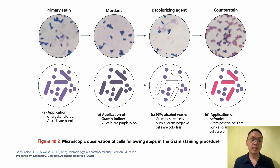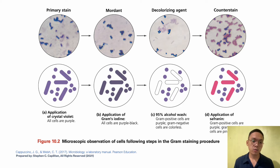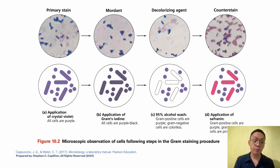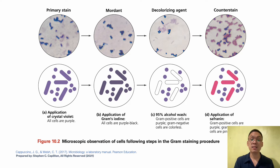The gram stain uses four different reagents. First, application of crystal violet — all cells become purple. Next, application of Gram's iodine — all cells are purple-black. Then the decolorizing agent, 95% alcohol wash — gram positive cells remain purple while gram negative cells become colorless. Finally, application of safranin — gram positive cells remain purple and gram negative cells are colored pink.